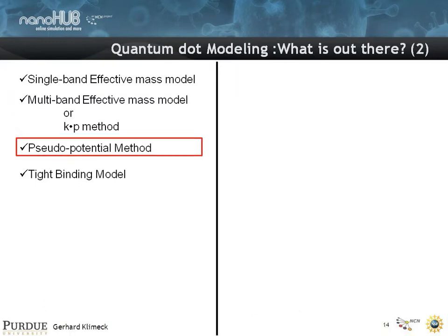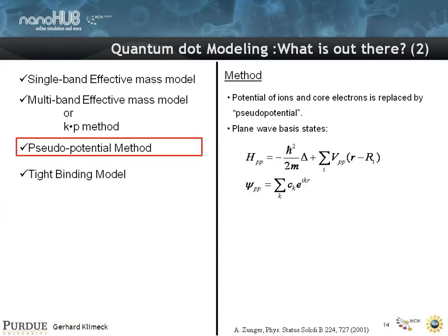There's a pseudo-potential method, and that's being pursued very strongly by a couple of people. What you do is really you represent the crystal explicitly, so it's an atomistic representation by a pseudo-potential which captures the effect of the core electrons and then models the valence electrons.